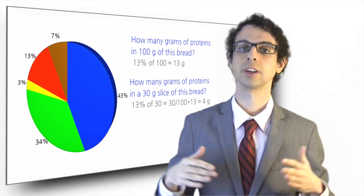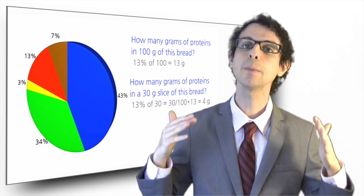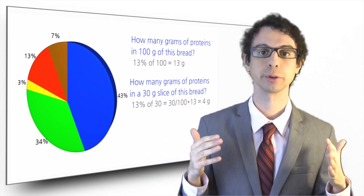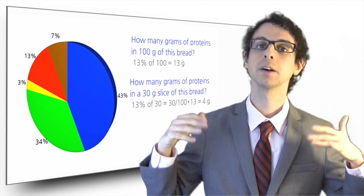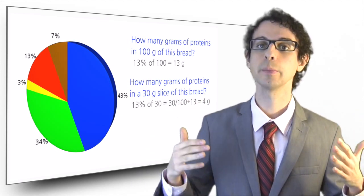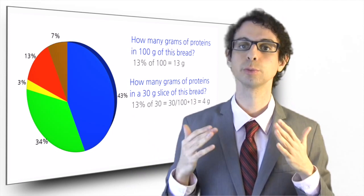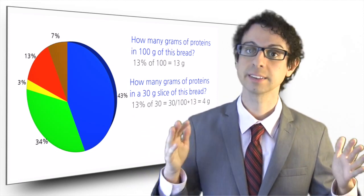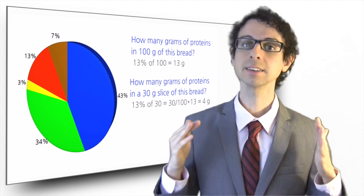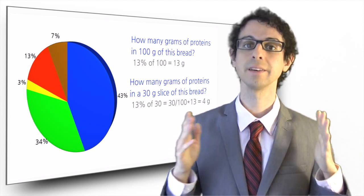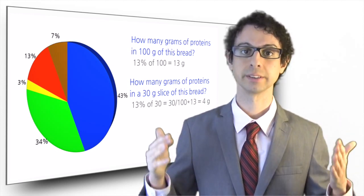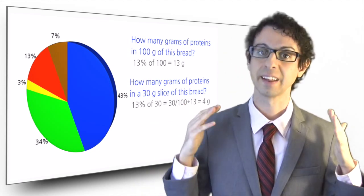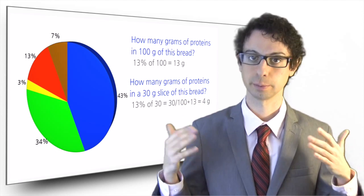Another useful calculation that is often done is looking at how much of the energy of a food comes from the different macronutrients. This can be useful because it allows us to easily compare a food with the ideal distribution of macronutrients in our diet, which is set in the DRIs. In this calculation, we consider that water and fiber provide no calories, that carbs and proteins provide 4 calories per gram, and that lipids provide 9 calories per gram.